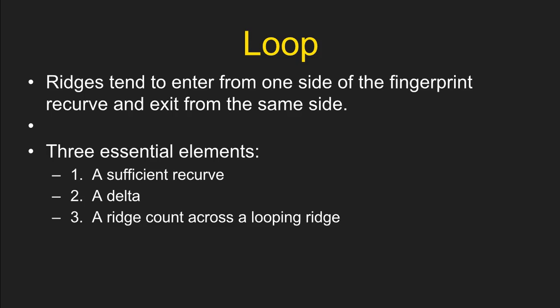Loops are patterns where ridges tend to enter from one side of the fingerprint, recurve, and then exit the same side. There are three essential elements a fingerprint must possess to be classified as a loop — if it's missing any one of them, it cannot be classified as a loop. Those three elements are: at least one sufficient unspoiled recurve, one delta, and a ridge count of at least one crossing at least one looping ridge.